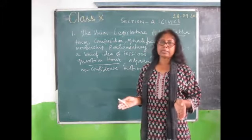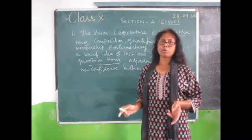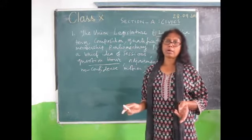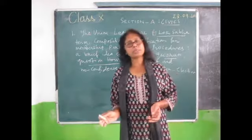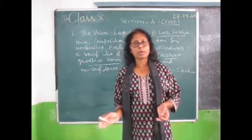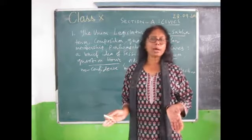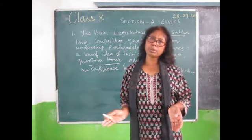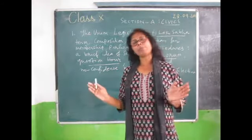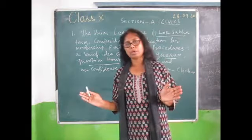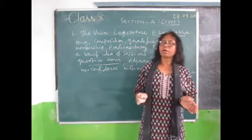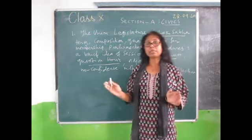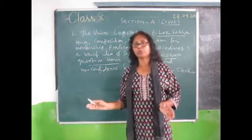The Union Legislature has two houses: one is Lok Sabha and one is Rajya Sabha. Lok Sabha is the lower house and Rajya Sabha is the upper house. Lok Sabha uses direct vote while Rajya Sabha uses indirect vote.